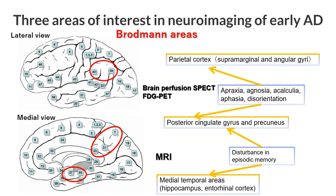Here are three areas of interest in neuroimaging in early Alzheimer's disease. The first is the inferior parietal association cortex, including the angular gyrus in Brodmann's area 39 and the supramarginal gyrus in Brodmann's area 40. Disorders in this area can cause apraxia, acalculia, aphasia, and disorientation.